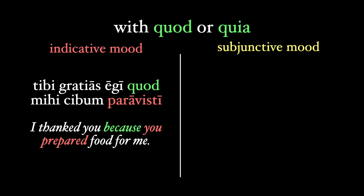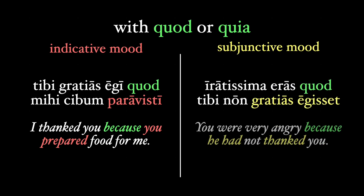But let's change this around to something like: Iratissima eras quod tibi non gratias egisset — You were very angry because he had not thanked you. We use the subjunctive egisset because we're trusting your authority on the fact that he wasn't nice. Perhaps we could say: you were very angry because, as you said, he hadn't thanked you.